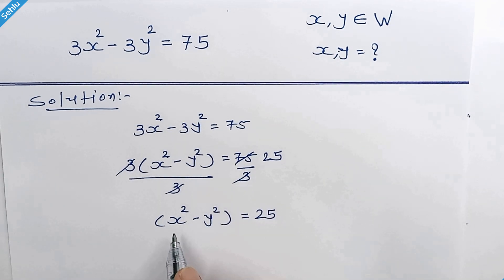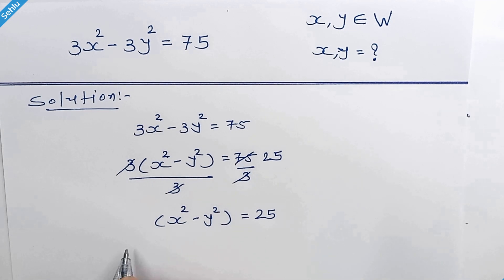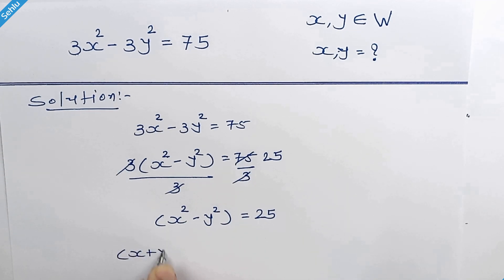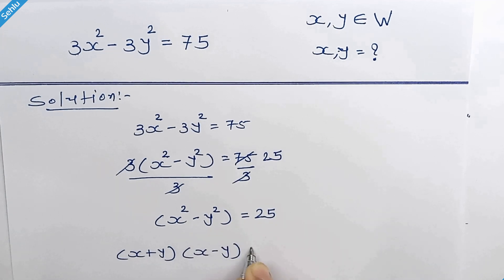Now we will apply the identity of difference of squares. So it will be x plus y times x minus y is equal to 25.